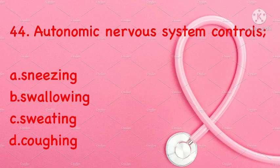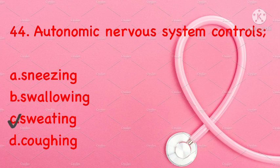The autonomic nervous system controls: sneezing, swallowing, sweating, or coughing. Correct answer is C: sweating.